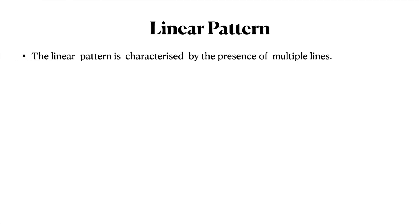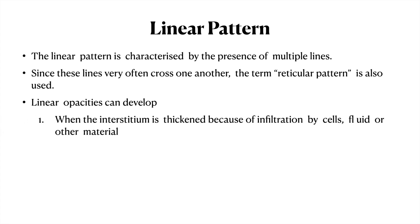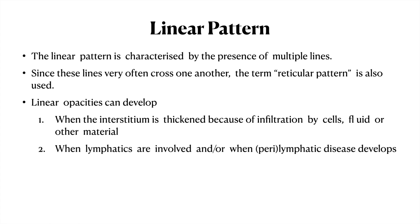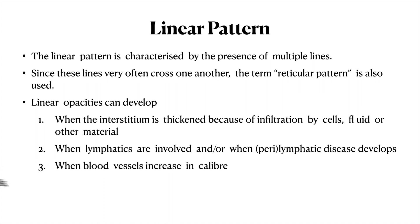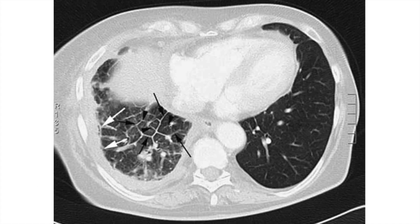The linear pattern is characterized by the presence of multiple lines which, crossing one another, give a reticular pattern. Linear opacities develop when the interstitium is thickened due to infiltration of cells, fluids, or other materials, when lymphatics are involved, when blood vessels increase in calibre, and when airway walls are thickened or lumens are filled with cells or other material.